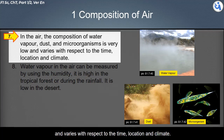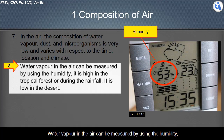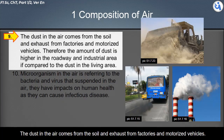The composition of water vapor, dust, and microorganisms is very low and varies with respect to time, location, and climate. Water vapor in the air can be measured using humidity — it is high in tropical forests or during rainfall, and low in the desert. Dust in the air comes from soil and exhaust from factories and motorized vehicles.